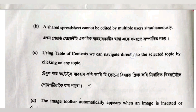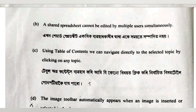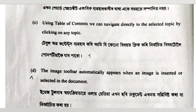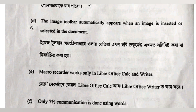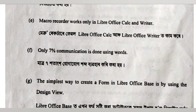Number C: using a table of contents, we can navigate directly to a selected topic by clicking on any topic — I think it will be true, because a hyperlink is added in the table of contents. So I think it is true. Number D: the image toolbar automatically appears when an image is inserted or selected in the document — it is true.